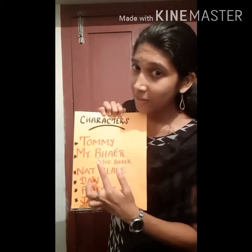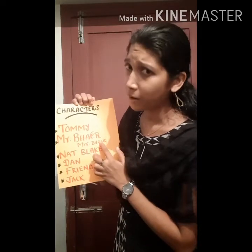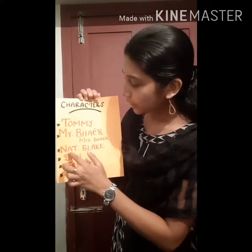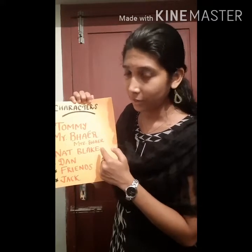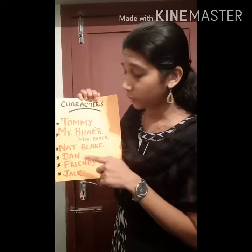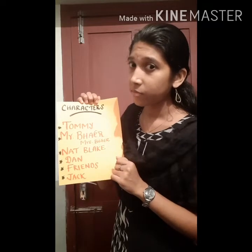Who were the main characters in that story? The main characters are Tommy, Mr. Bear, and Mrs. Bear — though Mrs. Bear is not so important, she just appears in one scene. And Nat Blake is another character. Then Dan and Jack, who are Tommy's friends, are also main characters. Let's see the story further. Before that, let me sum up what we discussed in the last class.